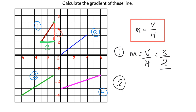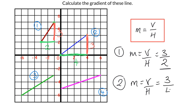For line two, the horizontal distance goes from zero to four, so that distance is four. Vertically, we've gone from zero to three, so that is three. Using the formula gradient equals V over H, the vertical distance is three and the horizontal distance is four. So the gradient of line number two, the blue line, is three over four.